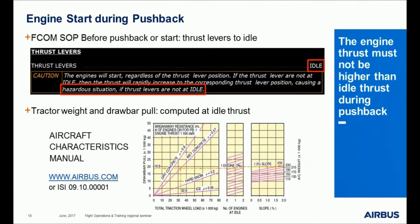The tractor weight and necessary drawbar pull are computed by accounting for idle thrust. The aircraft characteristics manual provides a graph to compute the appropriate towing characteristics, which can be retrieved on Airbus.com or in an easy article. As shown on the graph, the appropriate tractor tow bar weight depends on several parameters, and it is assumed that thrust is set to idle.